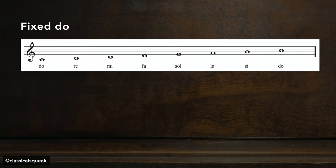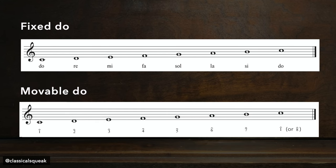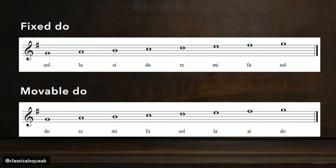For those less familiar, fixed doe means the letter names and solfege syllables remain constant, so C is always doe, D is re, E is me, etc. Whereas movable doe changes depending on the scale degrees or the number of the note in the scale you're using. For example, if I'm in G major, fixed doe means G is sol, A is la, B is si — whereas movable doe, G becomes doe, A is re, B is me, etc.